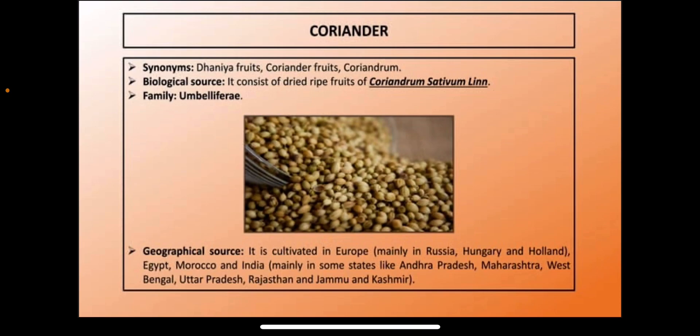First comes coriander, which is used as a spice in cooking. Coriander means suka dhaniya or coriander leaves. Synonyms are dhaniya fruit, coriander fruit, and coriander. The biological source: it consists of the dry fruits of Coriandrum sativum belonging to family Umbelliferae. As you can see in the picture, these are the dry fruits of Coriandrum sativum.